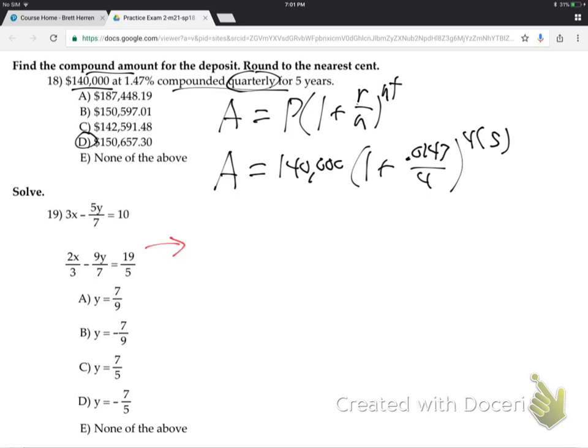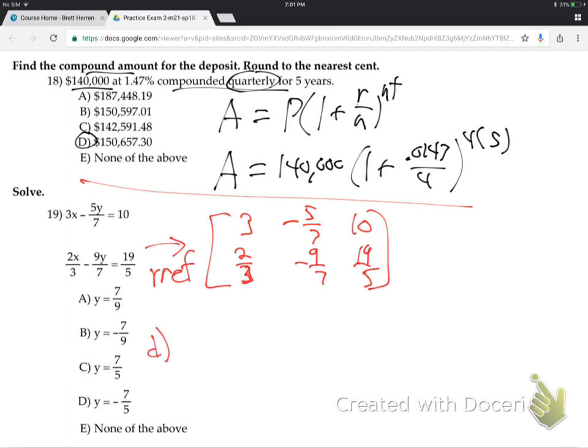19 is just put it in big old matrix in your calculator. 3. Minus 5 sevenths. 10. 2 thirds. And minus 9 sevenths. 19 fifths. And hit RREF. And you'll get the answer, which is actually down below here. It's D, which is Y equals minus 7 fifths. That's the answer for number 19.